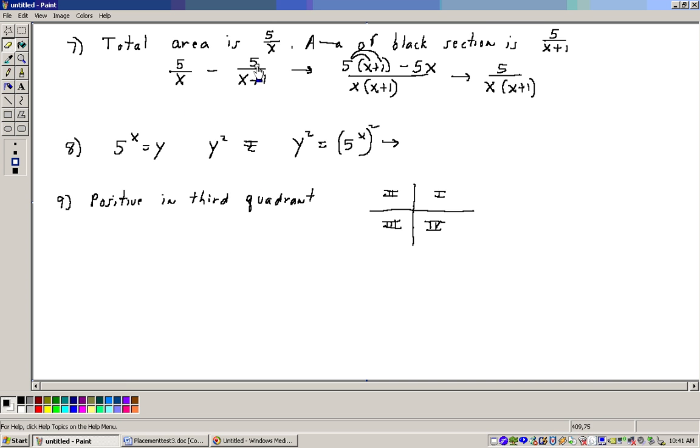and we need to subtract off the area of the black section. So we need to take 5 over x and subtract off the 5 over x plus 1, and to do that we have to get a common denominator, which would be x times x plus 1.